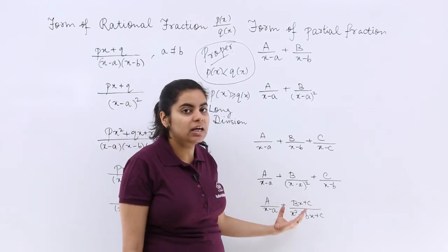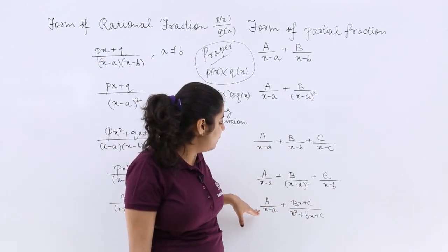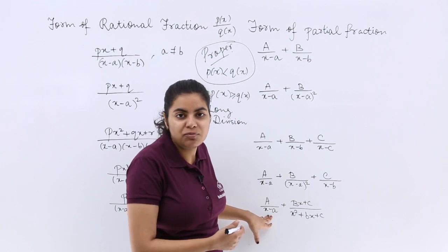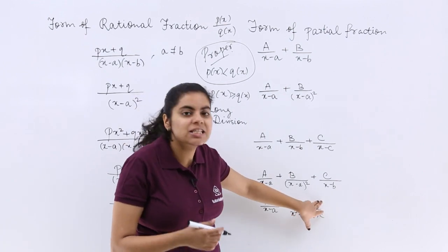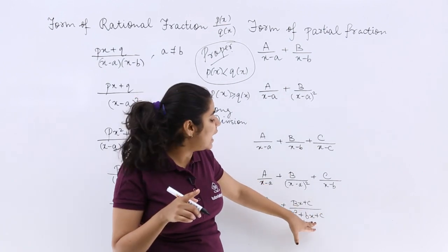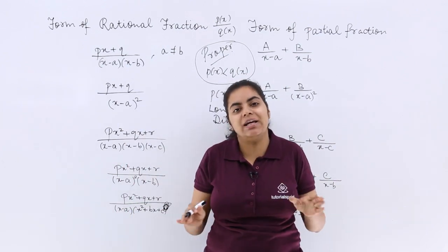Then you are going to adopt this method, this format: a/(x - a) + (bx + c)/(x² + bx + c), upon that factor which cannot be factorized further.